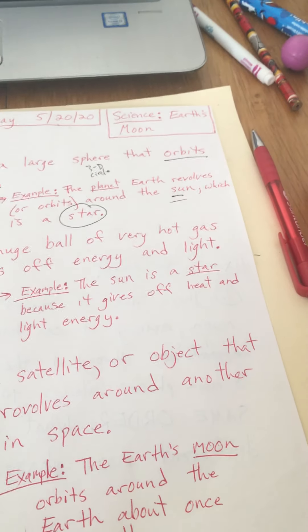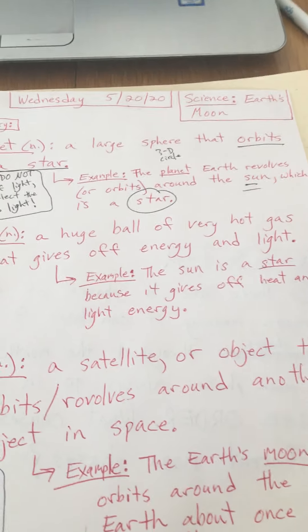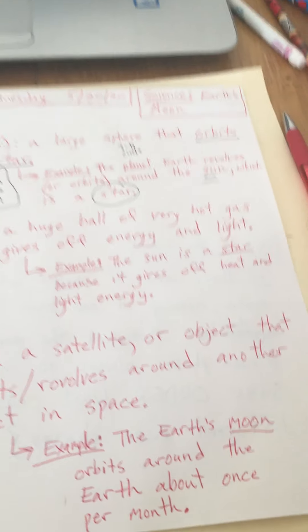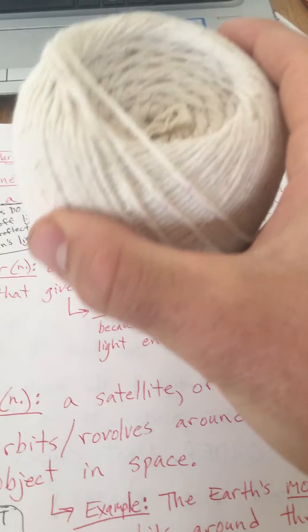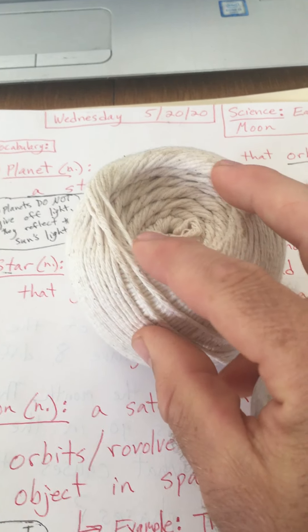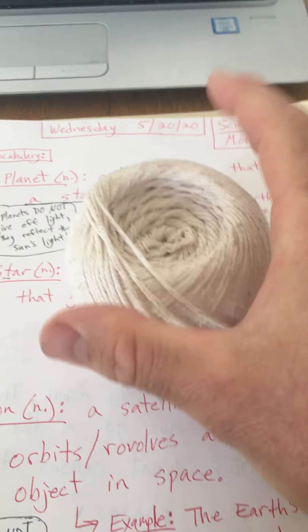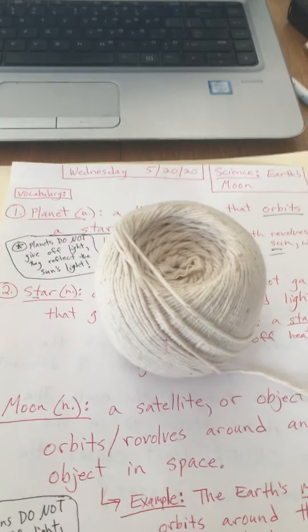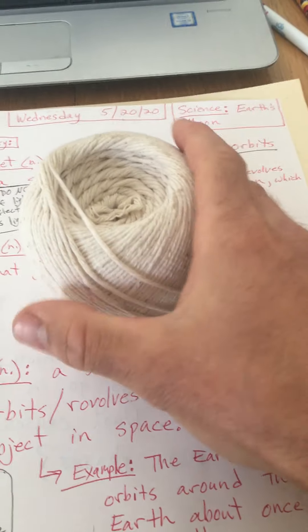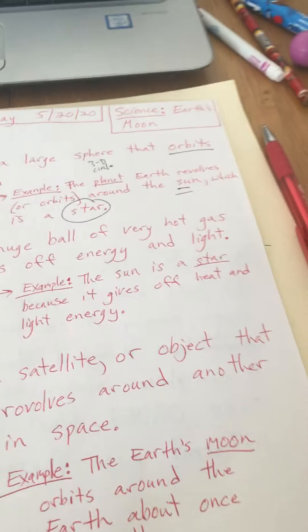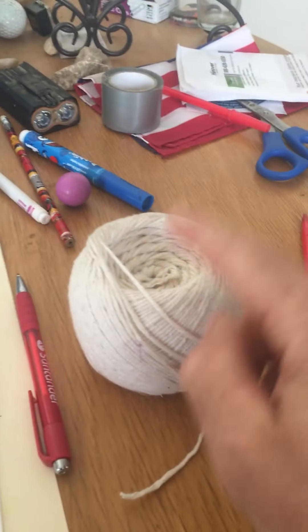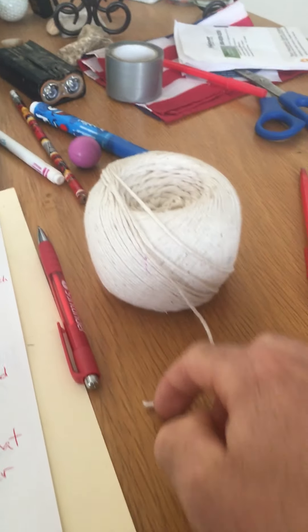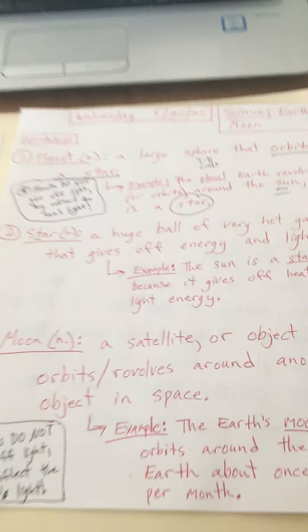All the stars we see up in the sky are really, really far away, but they are suns. The sun is a star, but those other stars are so far away that we don't see them as suns. Our star in our solar system we call the sun.